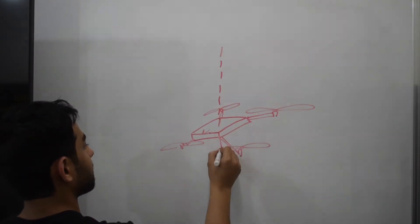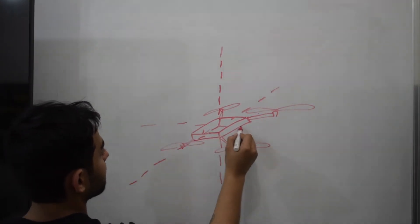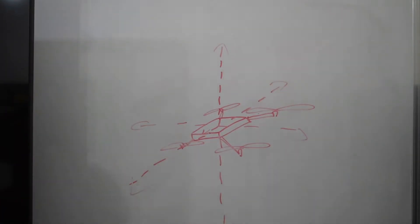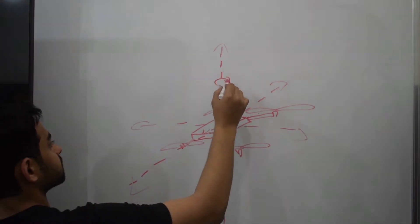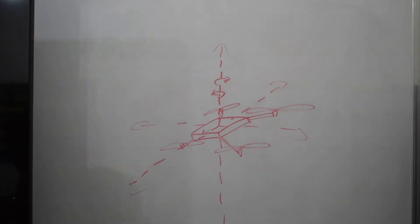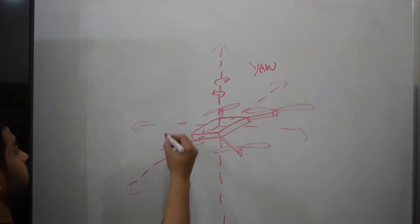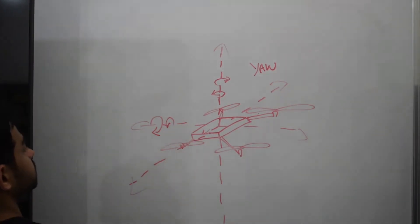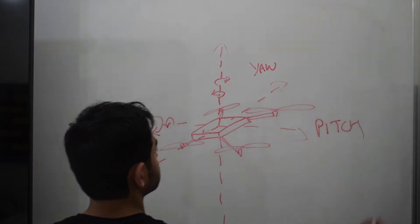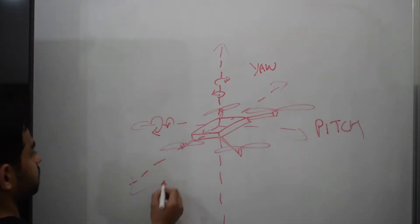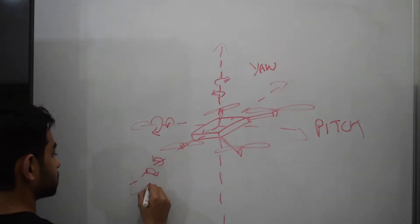This is my quadcopter from an oblique angle. The drone can move on three axes. Rotation on the vertical axis is called yaw. Rotation on the axis that goes along its width is called pitch. Rotation on the axis that goes along the length of the drone is called roll.